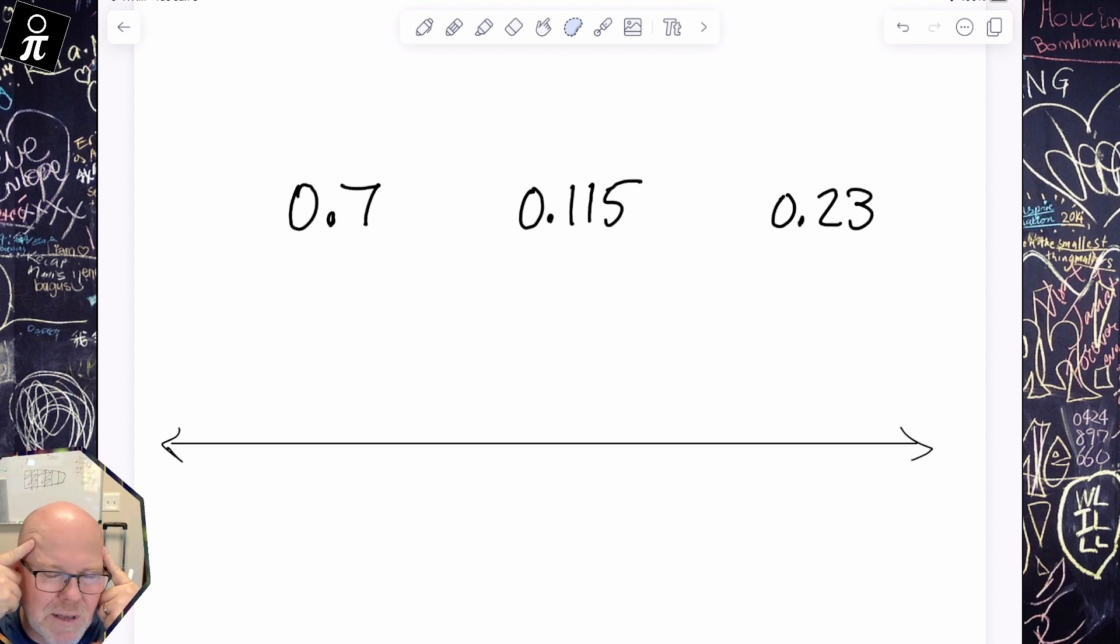Yes, some teachers and parents are going to say that's not 0.7, that's really supposed to be seven tenths. And that is absolutely true. But I'm not going to worry about being all academic language, because really what I want is to get to the meaning of these numbers. Even if students are using academic language, it doesn't mean they understand the meaning of these numerals.